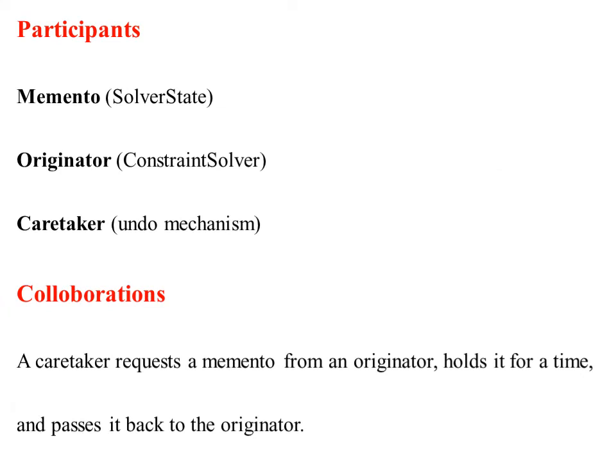The participants are Memento, Caretaker, and Originator. Memento defines the solver state. The Originator defines the condition solver — whatever the user needs to be restored. Memento helps to restore that state, acting as the solver state. The Caretaker is the processing mechanism — the undo mechanism. These are the participants as classes and objects.